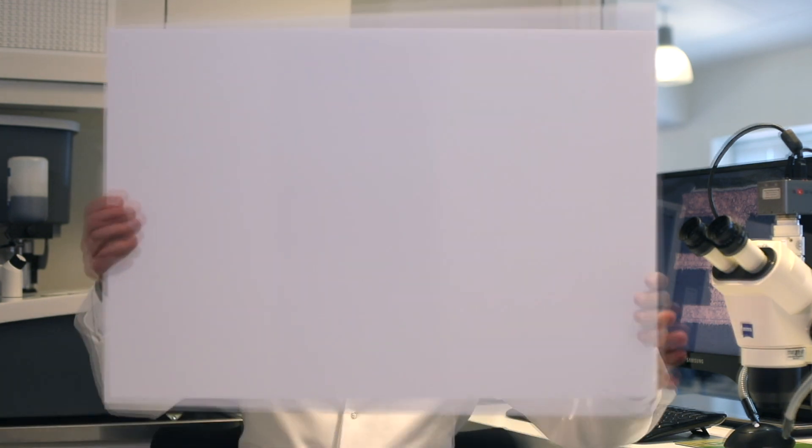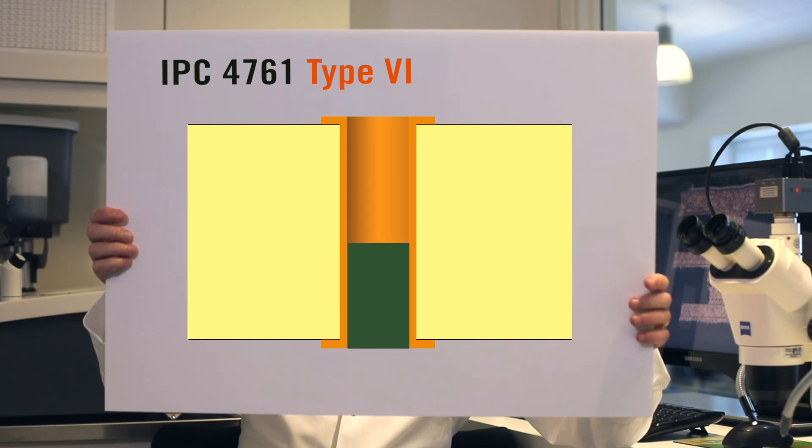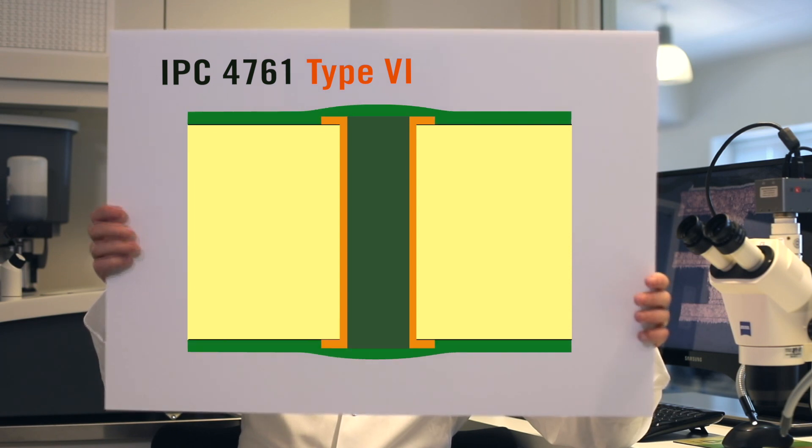For standard plugging and standard needs, NCAB recommends IPC 4761 Type 6 filled and covered. This means that we fill the via hole from one side using a stencil and a screen printing process before we apply solder mask to the surface of the panel.